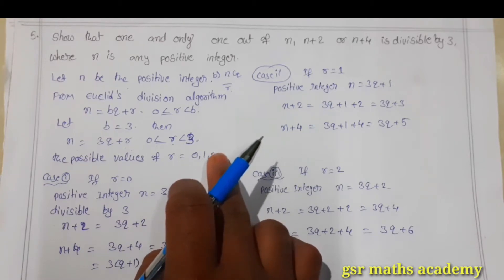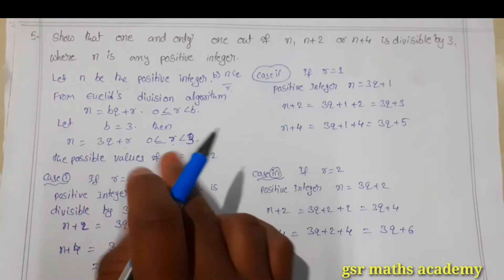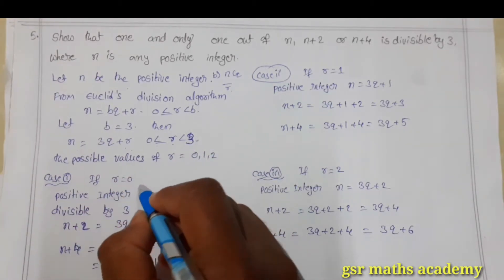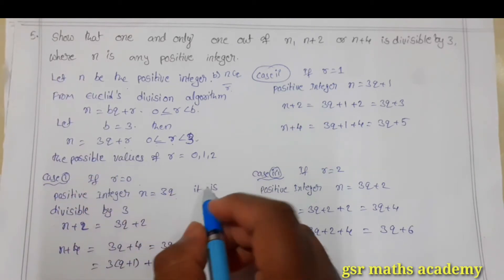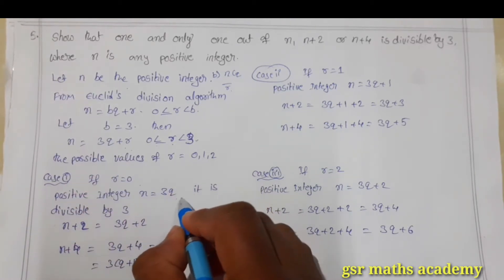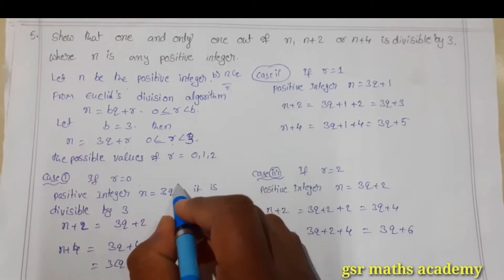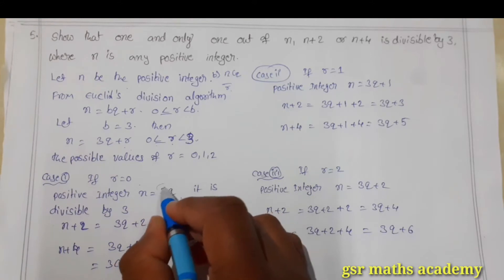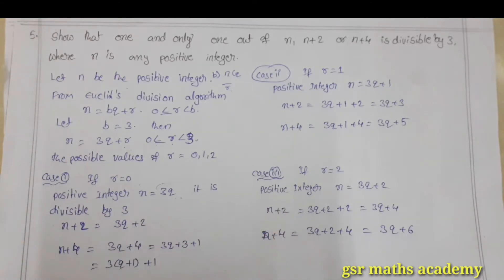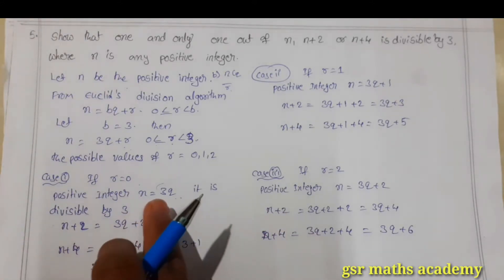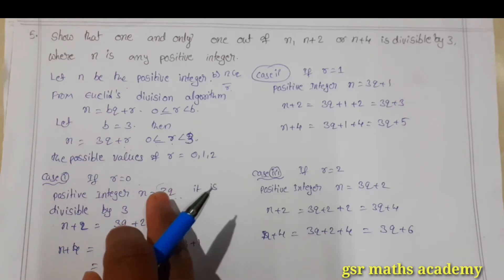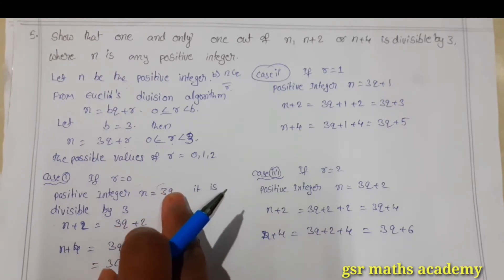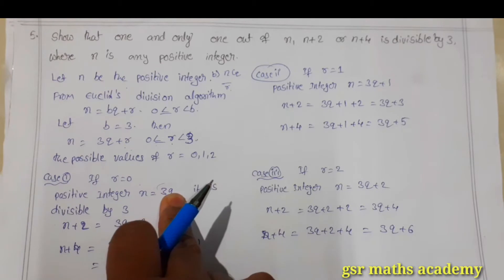If r is equal to 0, then positive integer n becomes 3q plus 0, which is 3q. So n is a multiple of 3, meaning it is divisible by 3. Since 3q means 3 into something, that means it is a multiple of 3, so it is divisible by 3.